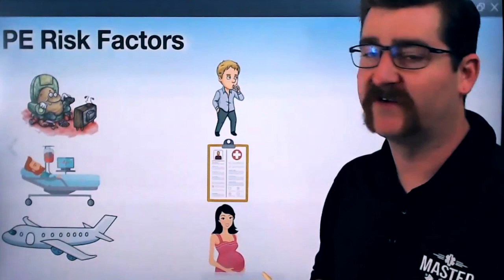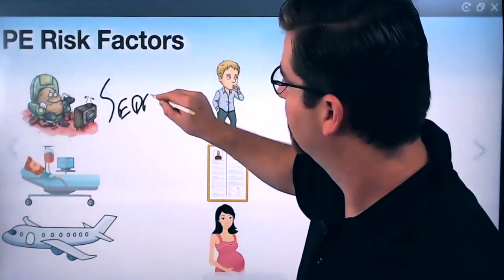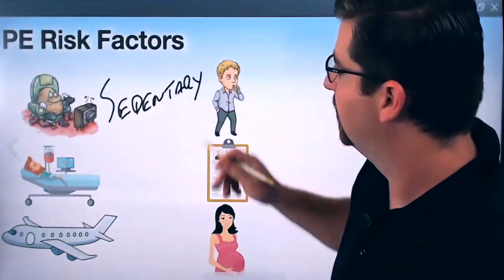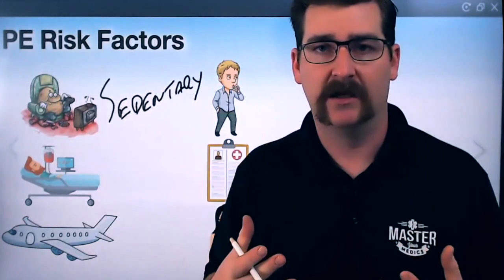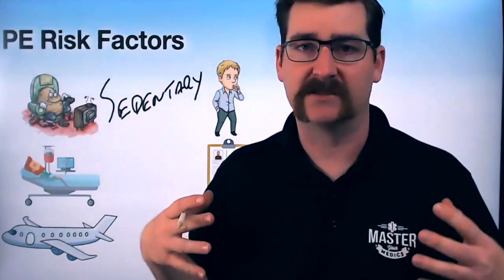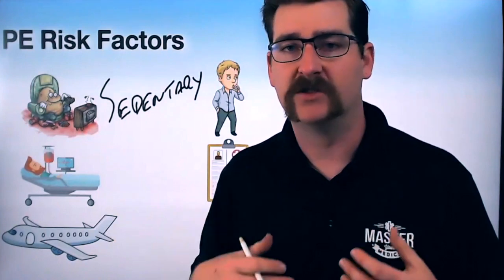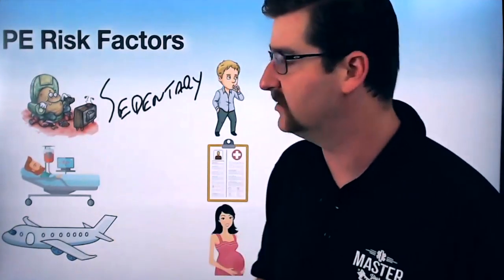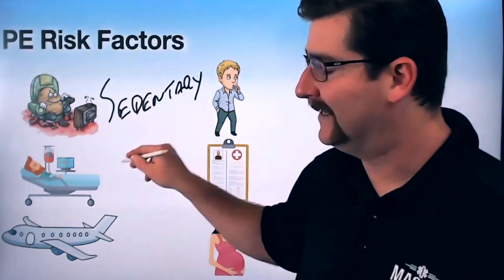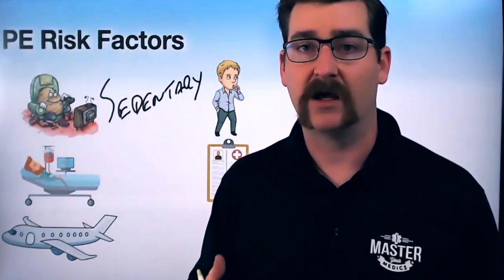PE risk factors: a sedentary lifestyle where somebody doesn't move around a whole lot means their blood is not going to leave the legs as easily, because the muscles aren't contracting to help flow that blood. So they develop clots in their legs a whole lot easier. On top of that, hospitalizations — where again, they're not moving around a whole lot.